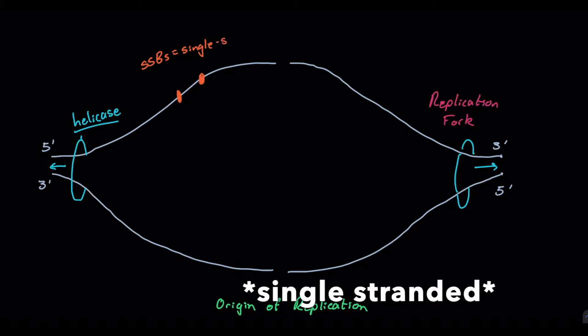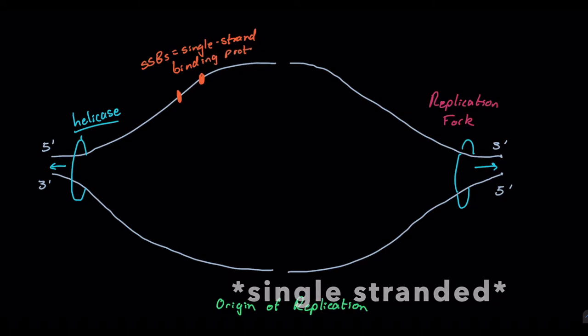Single strand binding proteins, and I'll just fill them in on each of our strands here. And these are what prevent the DNA strands from re-annealing or re-attaching themselves together. Because when we take a look at helicase, what's to prevent those hydrogen bonds from reforming that helicase just broken except for those SSBs.